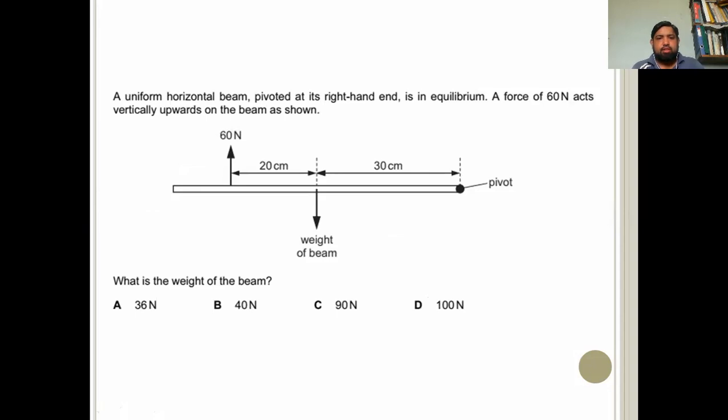A uniform horizontal beam pivoted at its right hand end is in equilibrium. A force of 60 Newton acts vertically upwards on the beam. So I'll remind you about object being in equilibrium. An object is in equilibrium if sum of forces is zero. Sum of forces means object is balanced. Forces are applying on the left hand side and forces applying on the right hand side, and same goes for the top and bottom and for the moments also because moment can be two ways, it can be clockwise or anticlockwise. So whatever moments we have acting on the object, their sum will be equals to zero. For example, a clockwise moment of 10 Newton meters will be equals to an anticlockwise moment of the same 10 Newton meter. And both will be balancing out each other and the object will be in equilibrium.